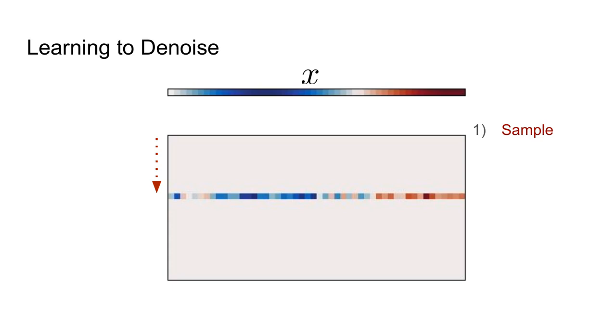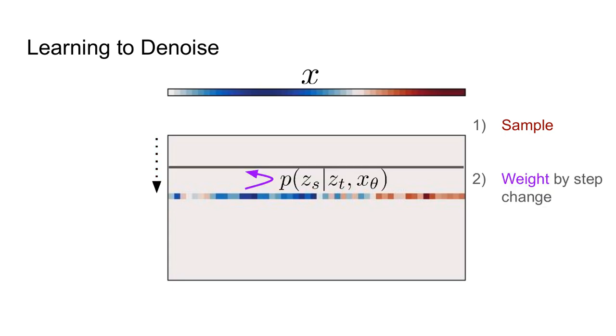To learn this function, we'll have an objective with three parts. First, we sample a noised version of our signal. Then we weight this sample by how much we expect it to change when trying to do denoising. And then we try to reconstruct the original signal from this point. We then backprop and learn a model.